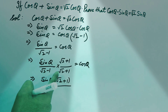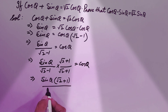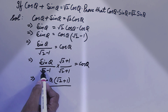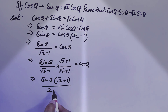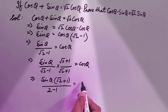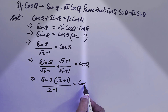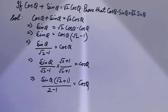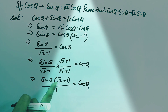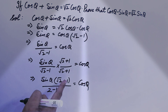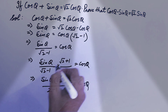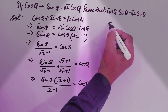In the denominator, we apply the identity (a - b)(a + b) = a² - b². So (√2)² - 1² = 2 - 1 = 1, which equals cos θ. We then expand the numerator: sin θ × √2 gives √2 sin θ, and sin θ × 1 gives sin θ.